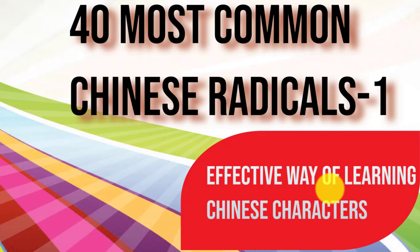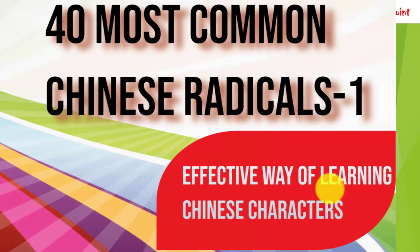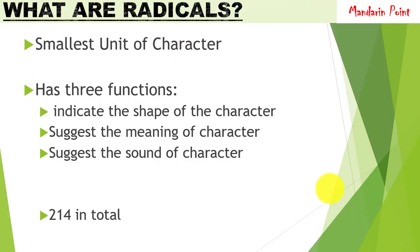Hello everyone, it's Umar bin Hussain. Previously we studied strokes, which were considered the smallest unit of Chinese characters while reading and writing. But today we will talk about the smallest unit which will help us in understanding the meaning of written characters. This smallest unit is known as radicals.